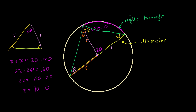So what is this whole angle over here? It's going to be theta plus 90 minus theta. The thetas cancel out. So no matter what, as long as one side of my triangle is a diameter and the vertex of the angle opposite that side sits on the circumference, then this angle right here is going to be a right angle — and this is going to be a right triangle.